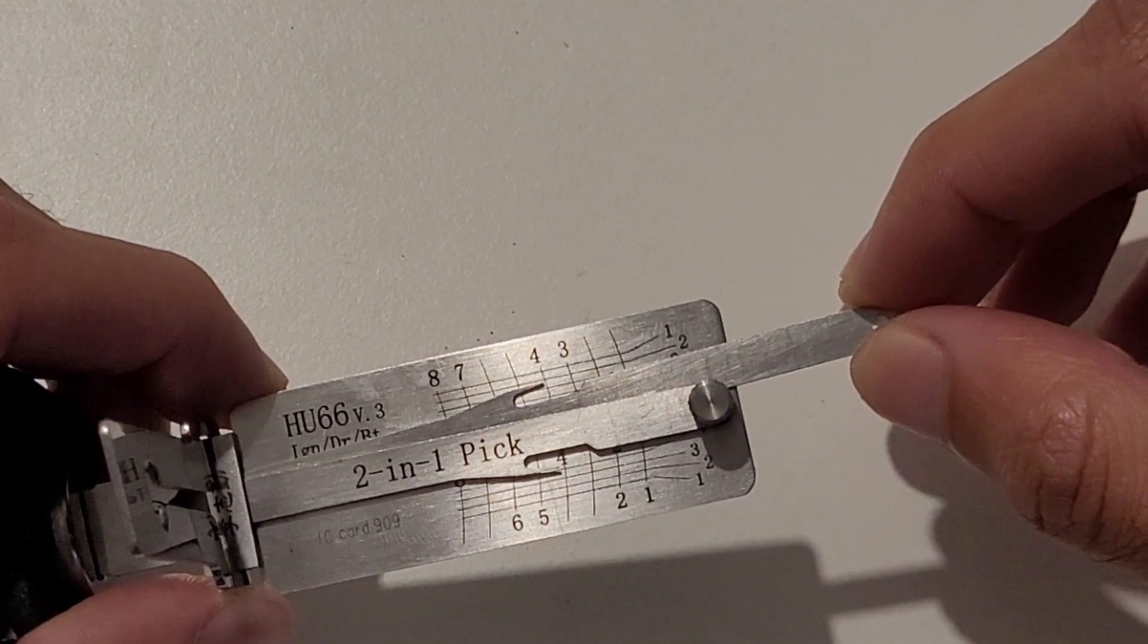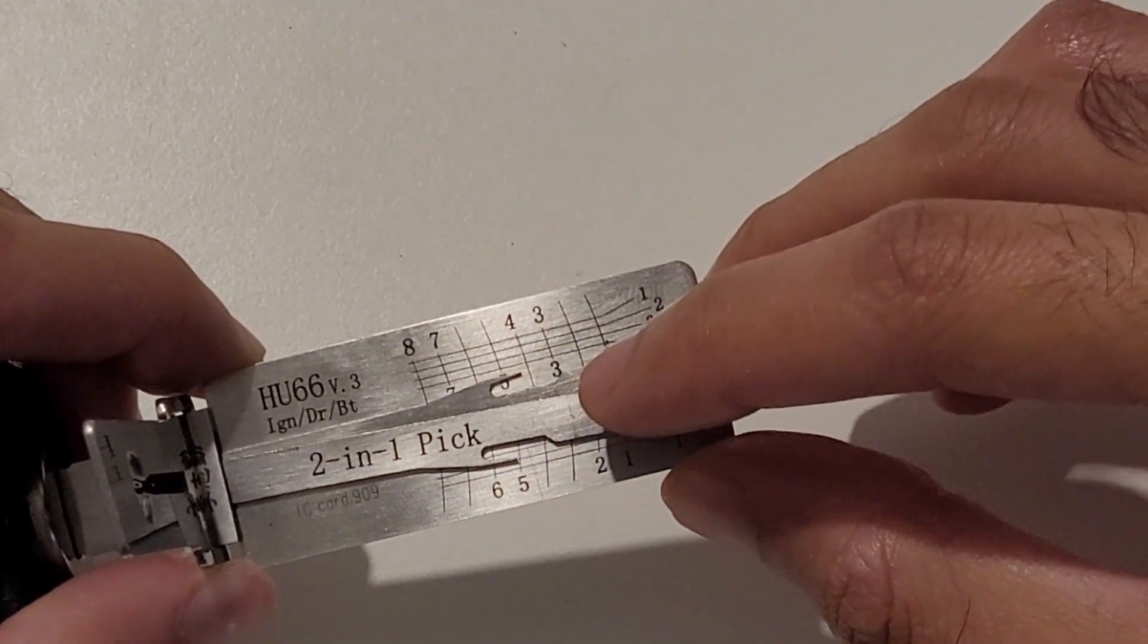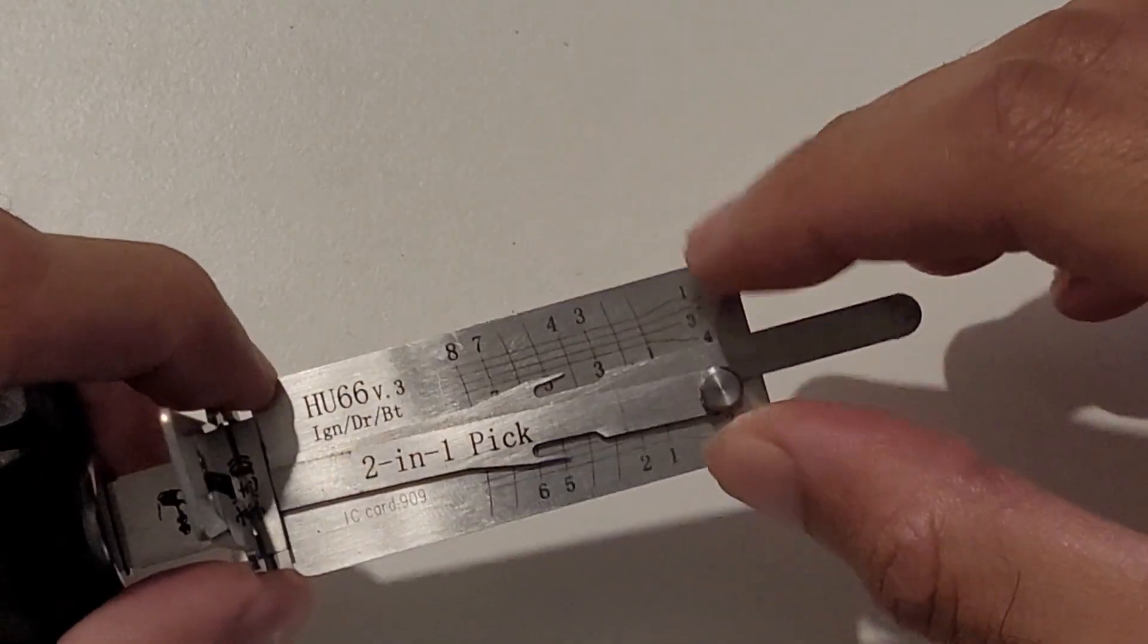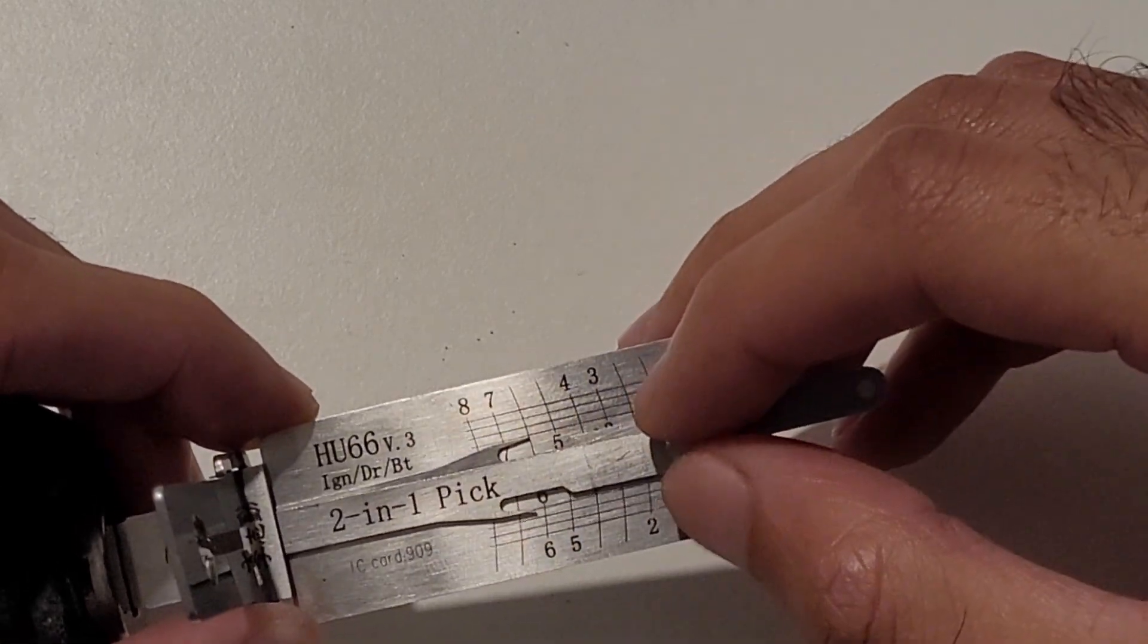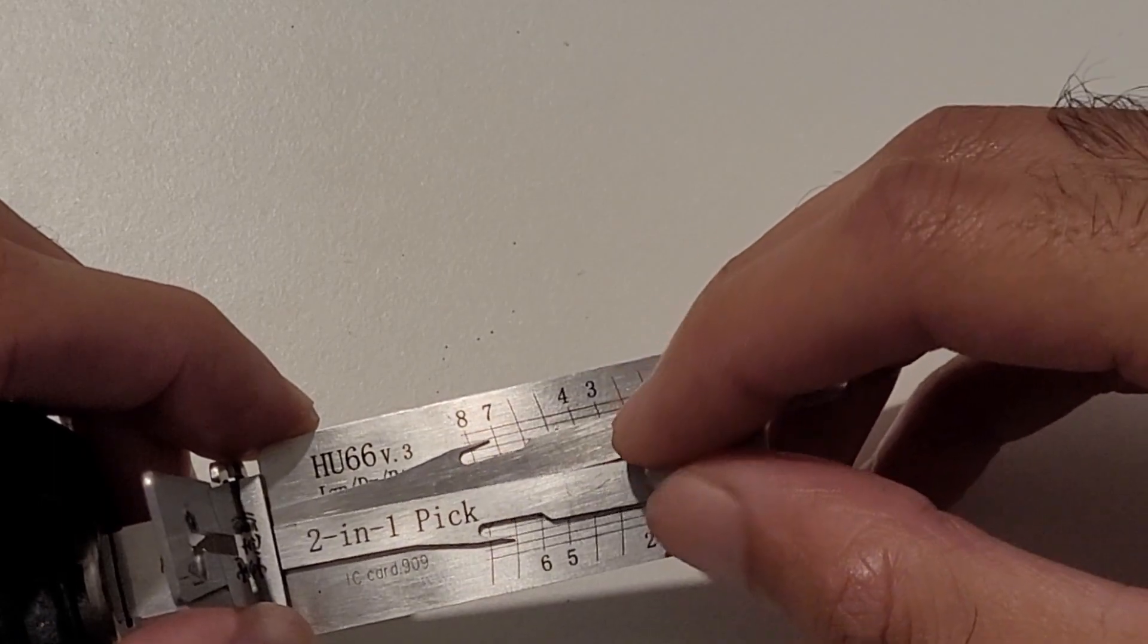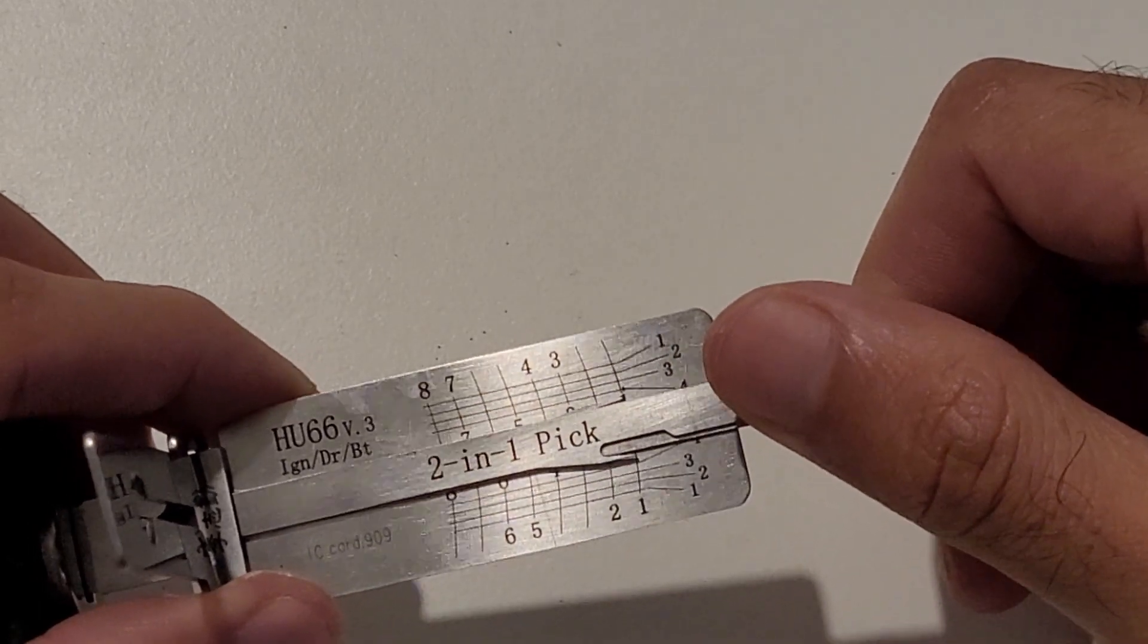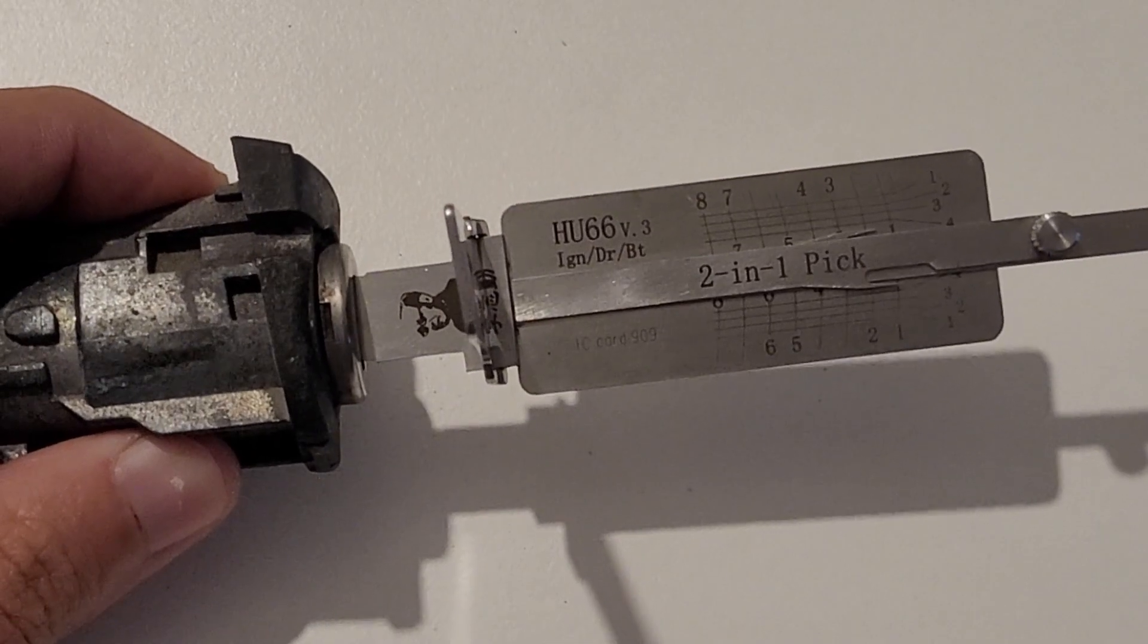Moving across to number four, that is also a number two. Number five is partly between a one and a two, so for this instance we'll note down one and two, and then we can go back through and redo the decoding. Number six is a two, number seven is a two, and number eight is also a two. A lot of twos in this lock, but that is the decoding process, nice and simple.